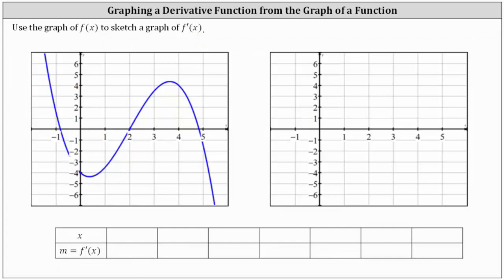Let's begin by determining the points on the graph of f of x where the tangent line would be horizontal — for example, here at the relative minimum, as well as here at the relative maximum. Let's sketch the horizontal tangent lines. We know horizontal lines have a slope of zero. So we estimate x to be approximately 0.3 where we have a horizontal tangent line, and on the right, x is approximately 3.7. When x equals 0.3, the derivative function value is zero, and when x equals 3.7, the derivative function value is also zero.